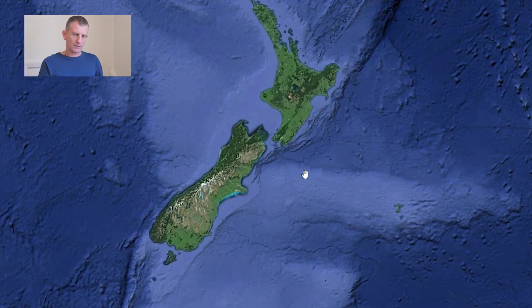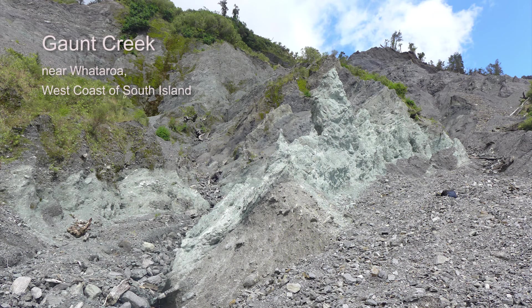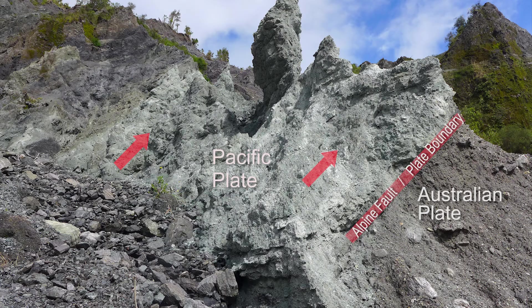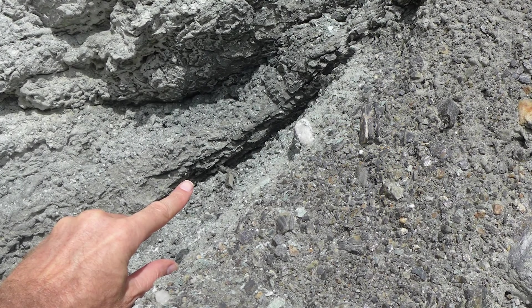That's a description of the plate boundary as it runs through New Zealand and why it is different in different parts of the country. In the South Island at Gaunt Creek, there is a cliff section where you can see on one side the pale coloured rock of the Pacific plate, which has been pushed up from many kilometres deep in the earth, riding over the younger rocks of the Australian plate. In this photo you can actually see someone putting their finger on the plate boundary.